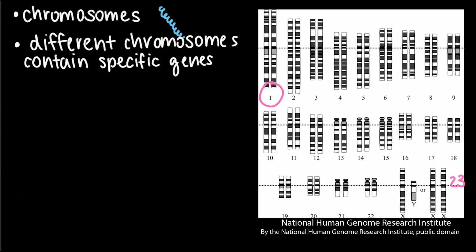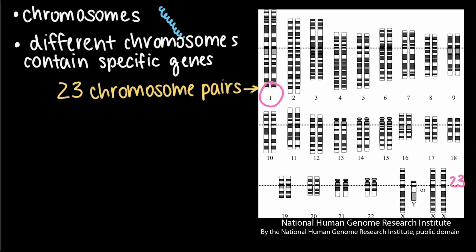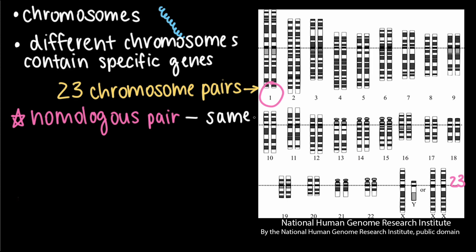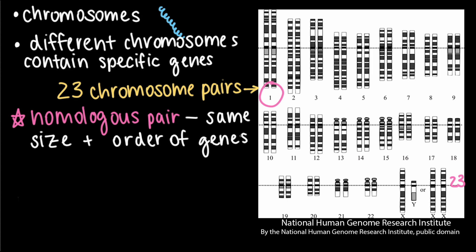However, there are two copies of each chromosome, so there are 23 chromosome pairs instead of 23 single chromosomes. Each chromosome pair is a homologous pair, which means that the two chromosomes are the same size and contain the same genes in the same order. However, the alleles on the two homologous chromosomes may be different, meaning the chromosomes may not have exactly the same genetic information.